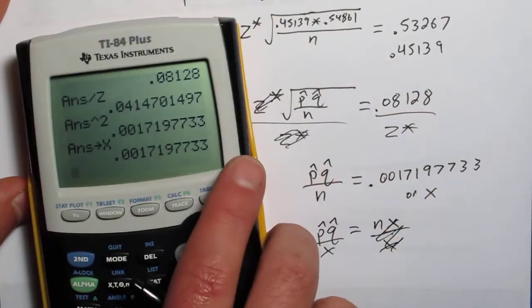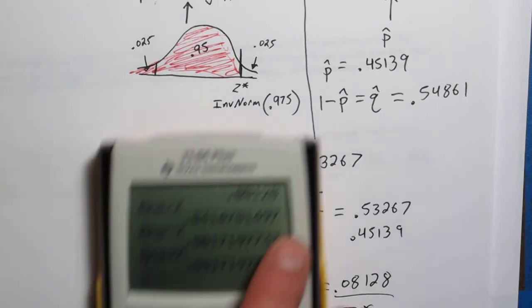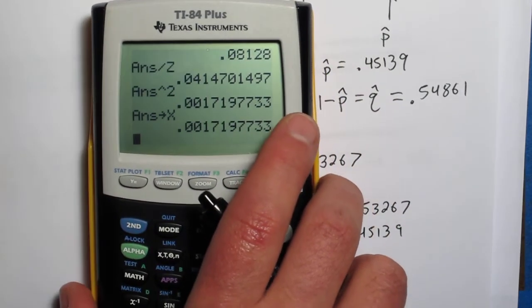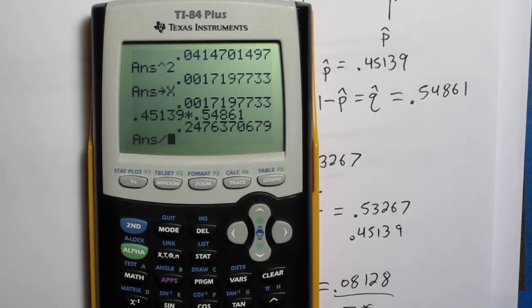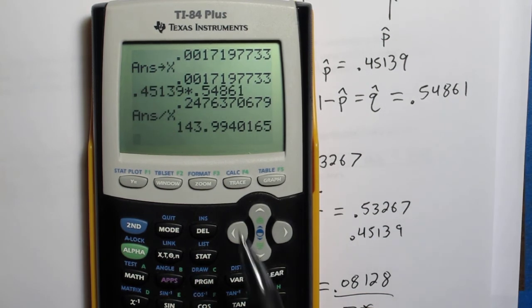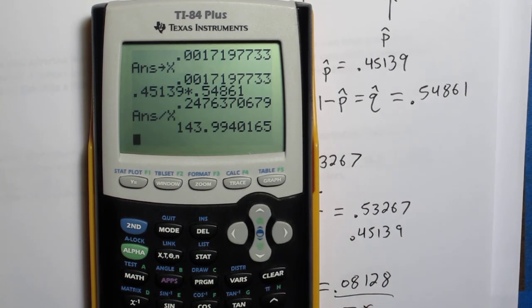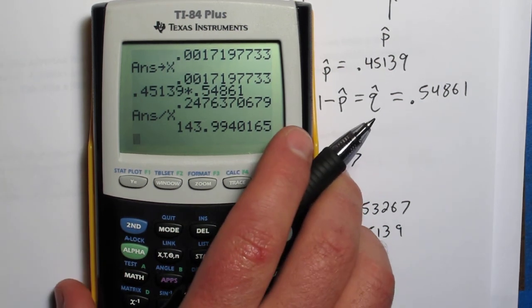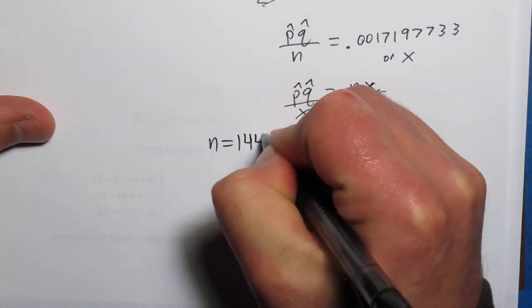So 0.45139 times 0.54861 is that. Divide that by x, and I get 143.99. So it's probably a rounding issue somewhere, but it appears the sample size is 144. So to answer the question, n, the sample size is 144.